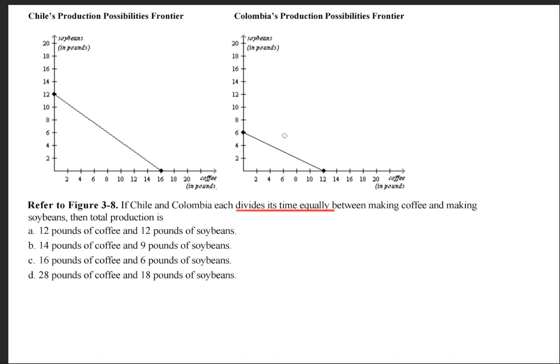So what I'm going to do is I'm going to take this production possibilities frontier curve and place it over here.